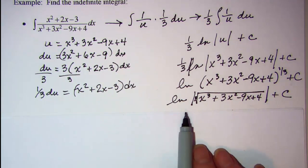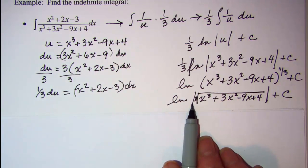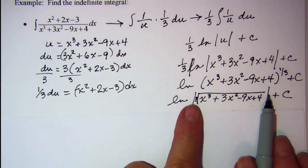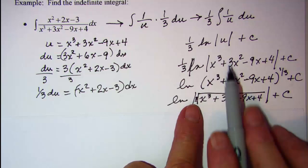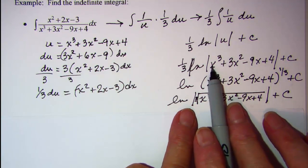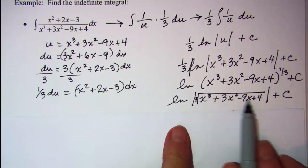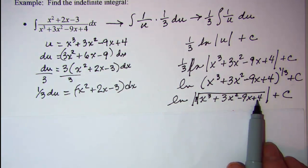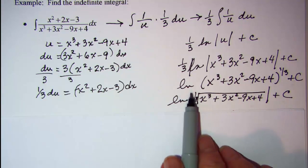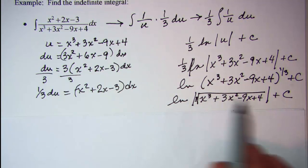Now the absolute values need to be around the argument, so the fact that I took them out from around the radicand is okay because we're still making sure that the argument of the natural logarithm is a positive number.